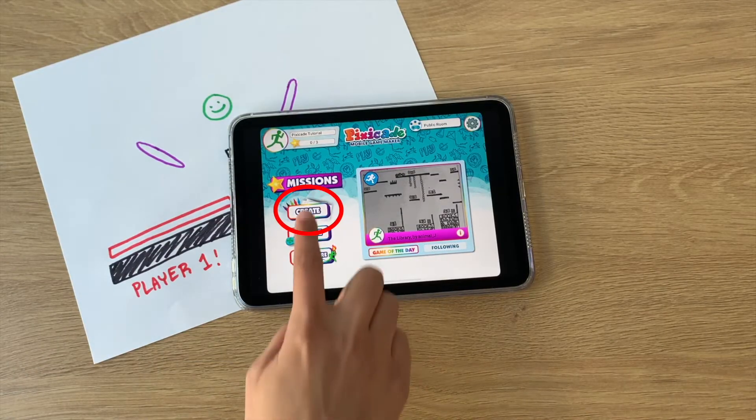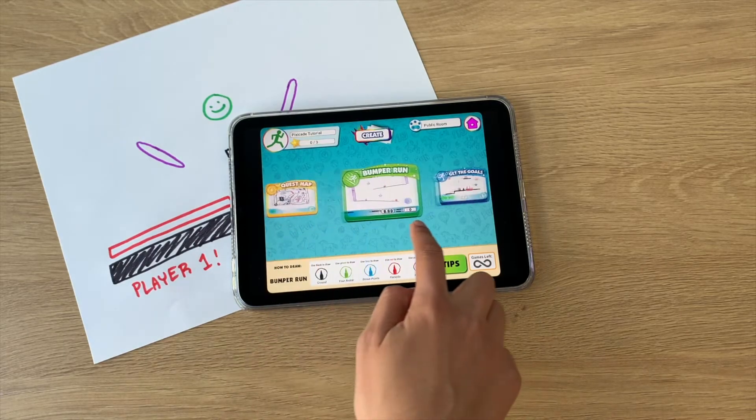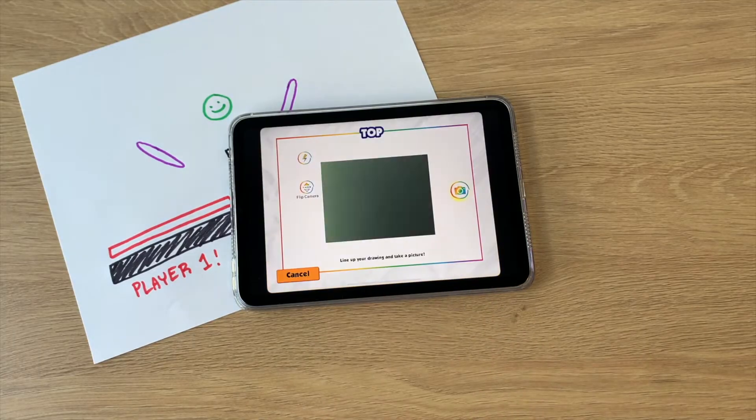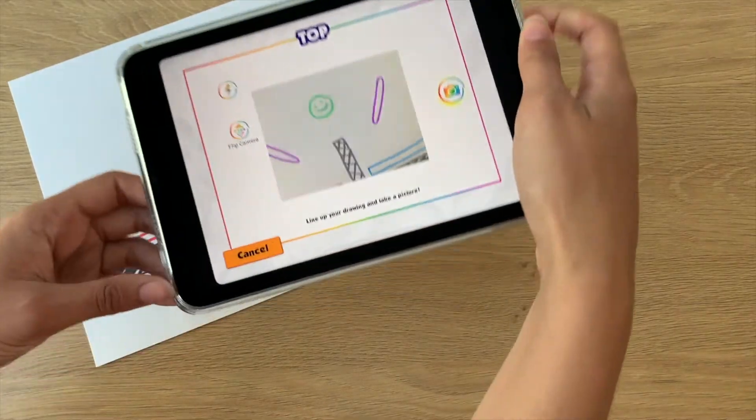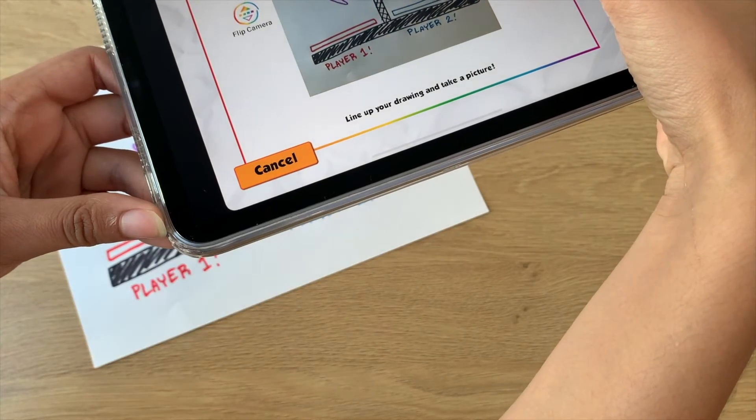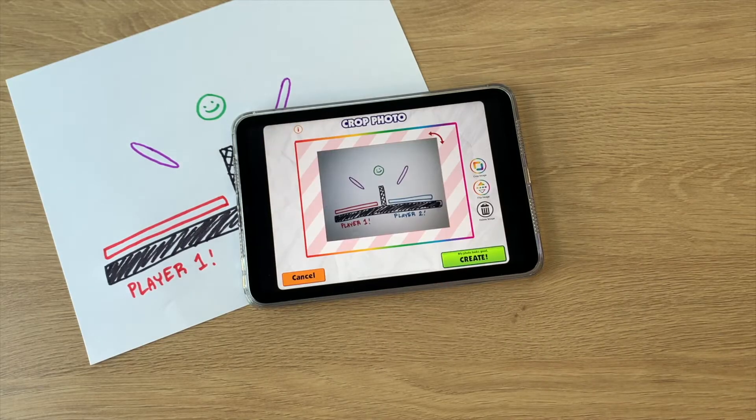Once your drawing is ready, click Create on the home screen. Then scroll and click the Volley Versus button to take your picture. Line up the camera. Make sure you have good lighting and nothing else is in the picture except your drawing. If your picture looks good in the preview, click Next.